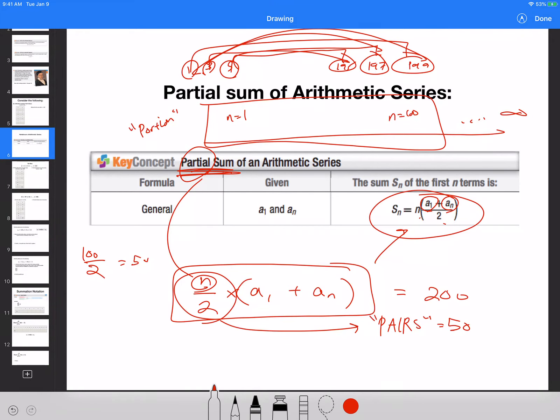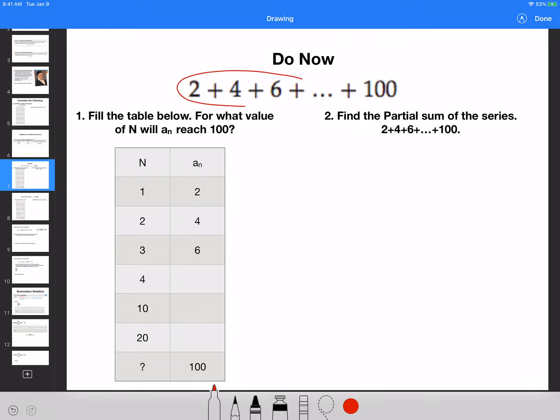Okay, so using the formula, let's take a look at this. Fill the table below for what value of n will reach 100—we don't really need to do that. Let's say I ask you to find a partial sum of the sequence, or series. When I say, what's the difference of sequence? Sequence is just the numbers. Series is the sum.